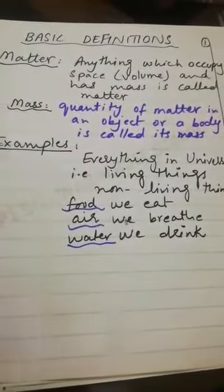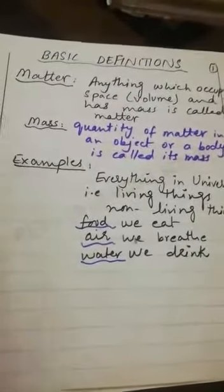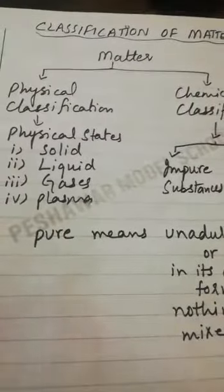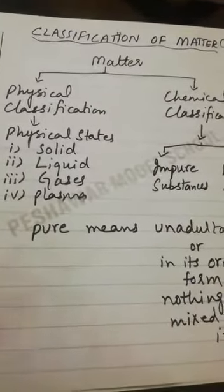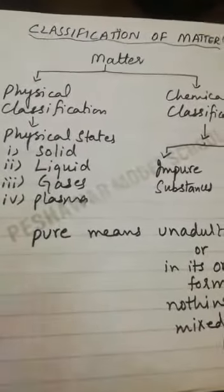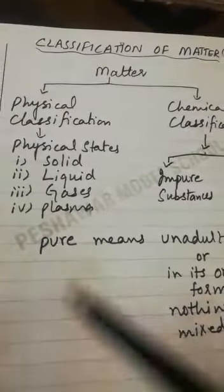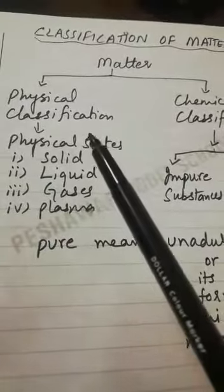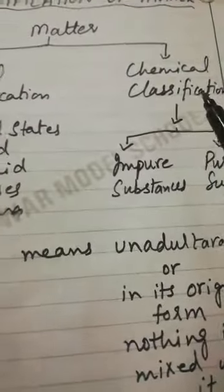Now moving towards the classification of matter — a sketch is given in your book. We discuss the classification of matter because there is great variation in different types of matter. Matter is classified on the basis of its physical as well as chemical classification, divided into two main types: physical classification and chemical classification.